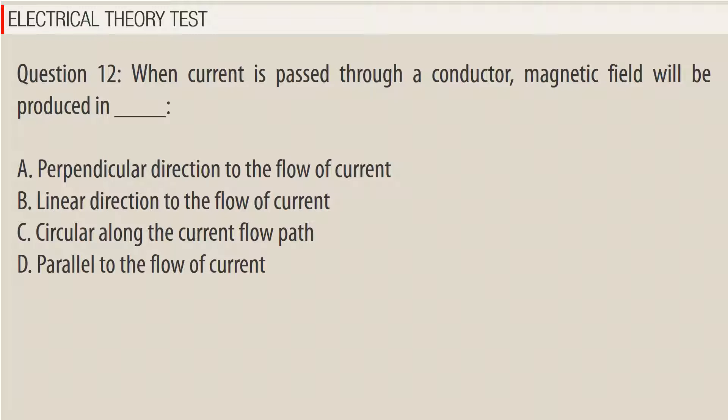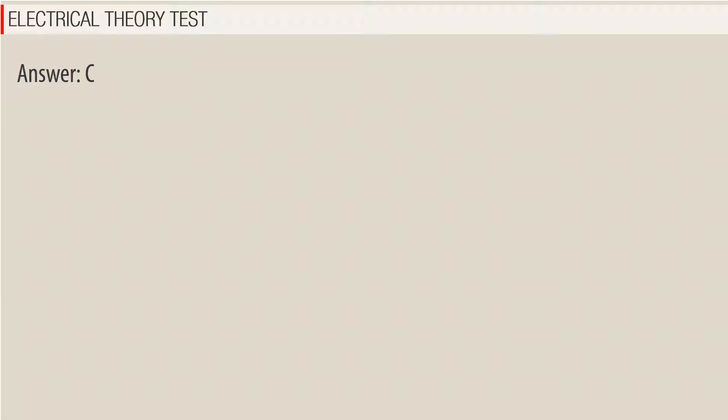Question 12. When current is passed through a conductor, magnetic field will be produced in: a. Perpendicular direction to the flow of current. b. Linear direction to the flow of current. c. Circular along the current flow path. d. Parallel to the flow of current. Answer: C.